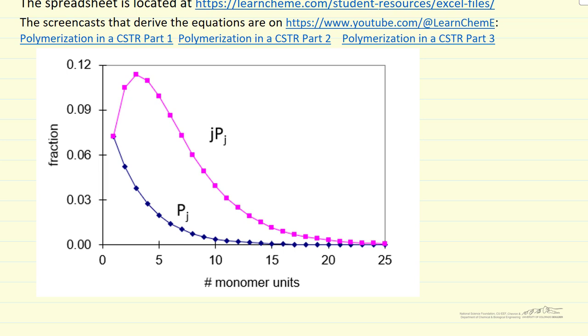P sub j is the polymer concentration with j units of monomer in the polymer, and j P sub j is the weight concentration, multiplying the polymer concentration by the number of monomer units.